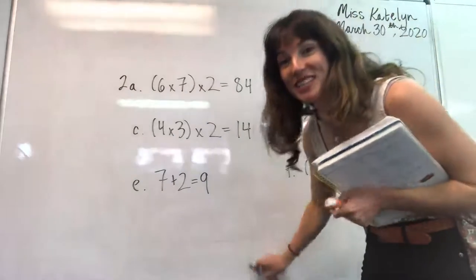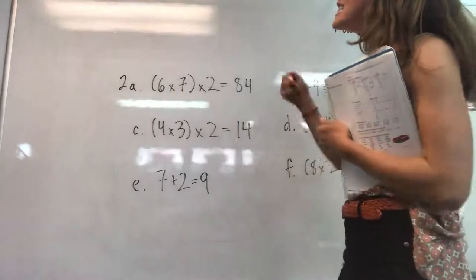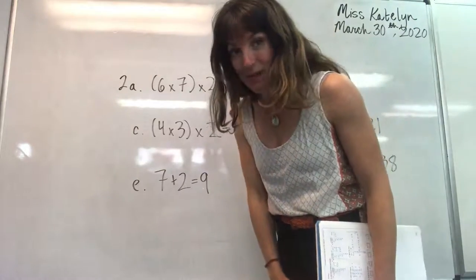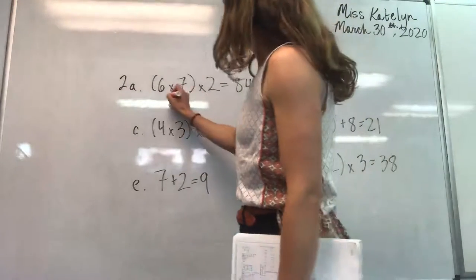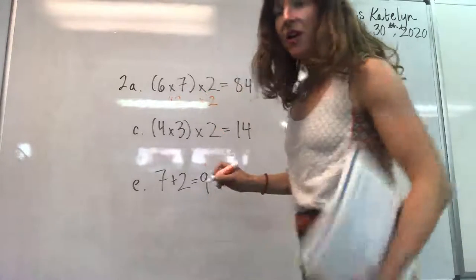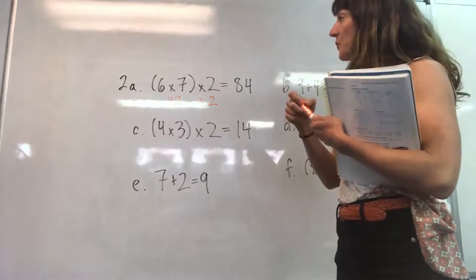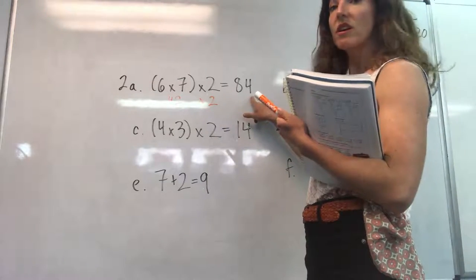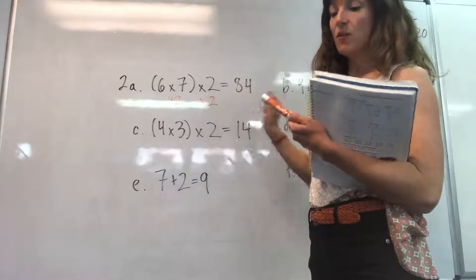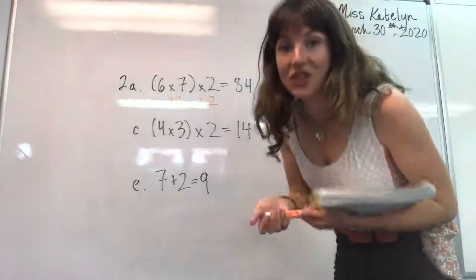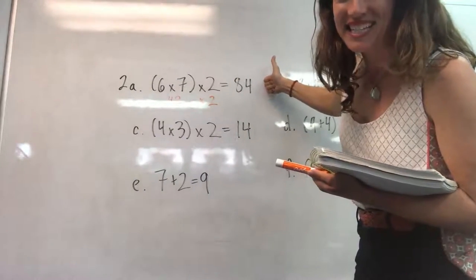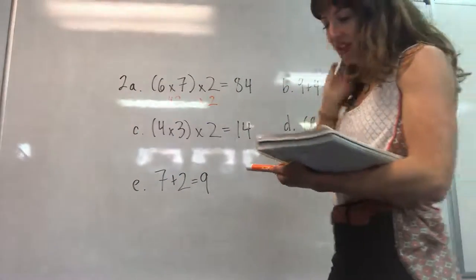All right, here we go. Please do what is inside the parentheses first. Six times seven. We should definitely know our six times tables by now. So that is 42 times two. 42 times two. Two times two is four. And two times four is eight. That is 84. So we're only circling the wrong answers. Leave that one alone. It's good.